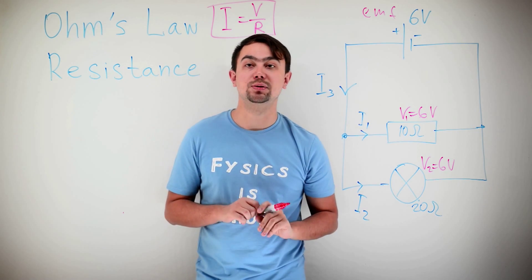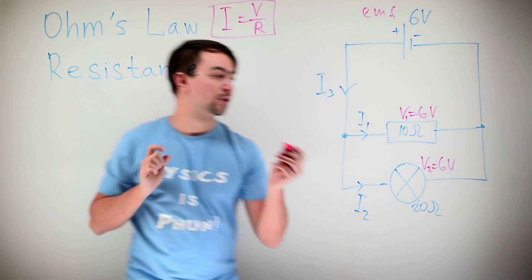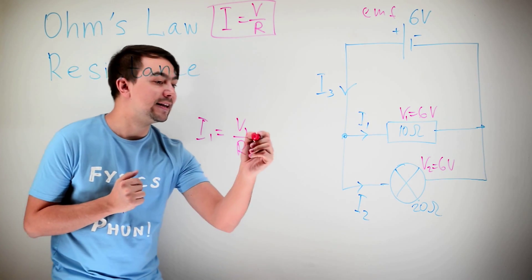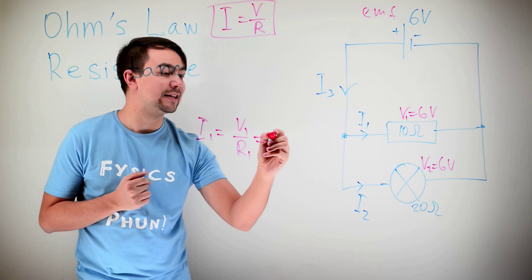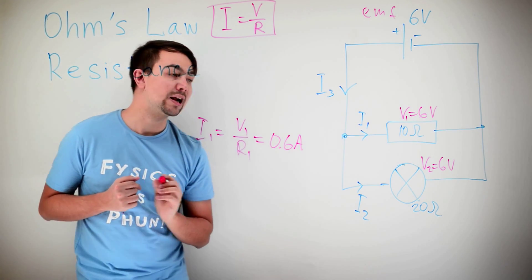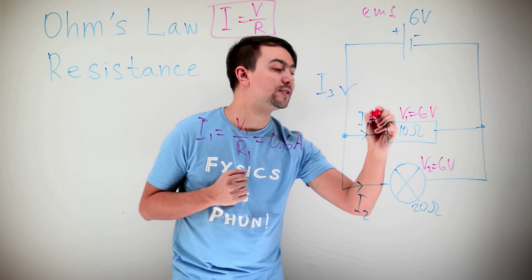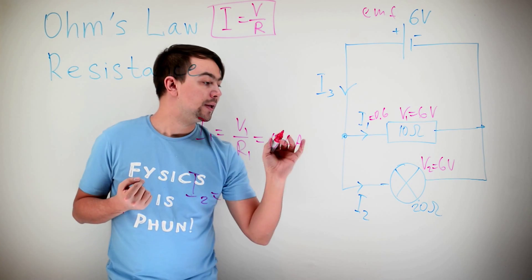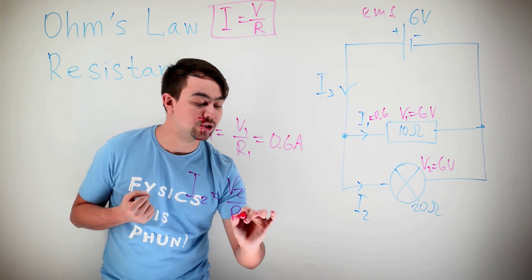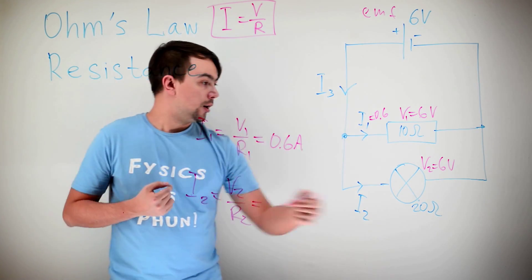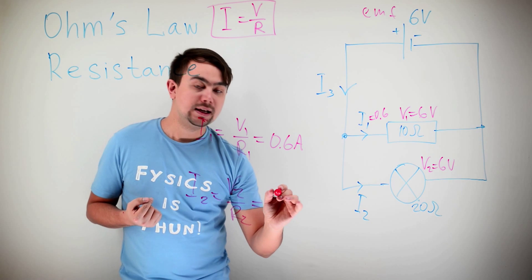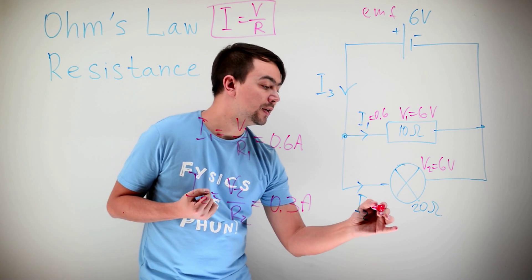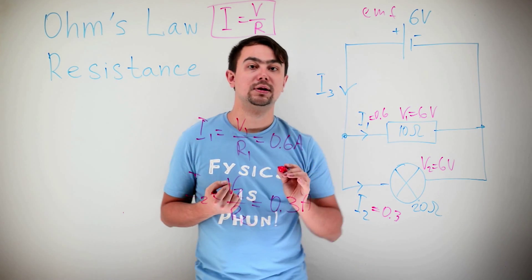Let's find I1 and I2. For this, we use Ohm's law. So I1 is simply V1 divided by R1, and that is 6 divided by 10. So 0.6 amps, or amperes. So I1 is 0.6. To find I2, we use the same formula. So I2 is V2 divided by R2, which gives us 6 divided by 20, and that is 0.3 amps. So I2 is 0.3.